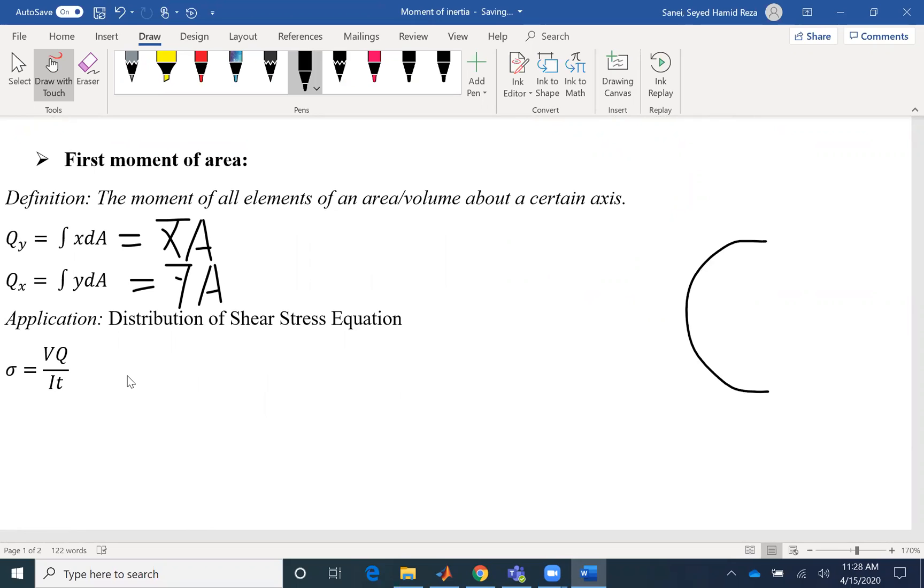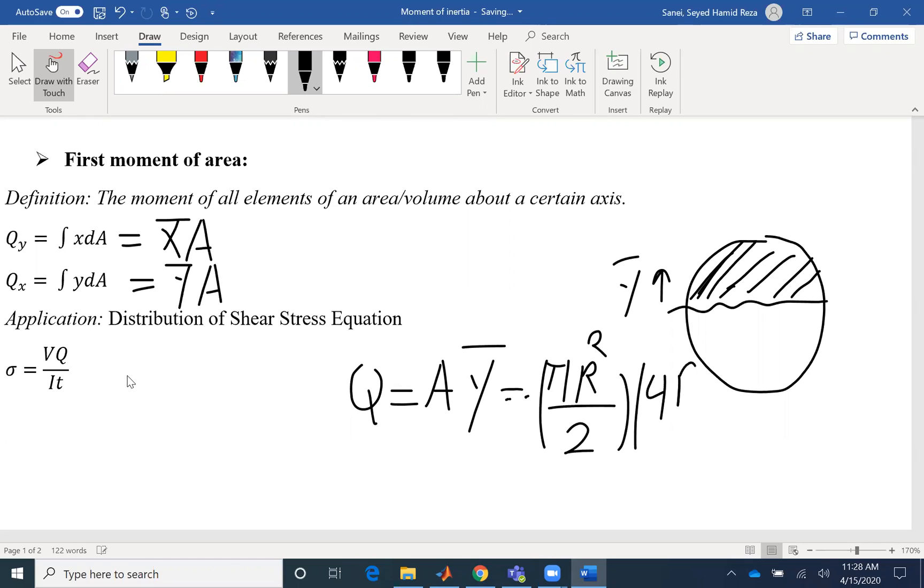Let's say you want to find the shear stresses in the middle of a circular object. So you need to find Q, and if Q is A Y bar, you know A is half of a circle, so pi R squared over 2, and Y bar is 4R over 3 pi. And then you can find your value of Q in shear stress equation.